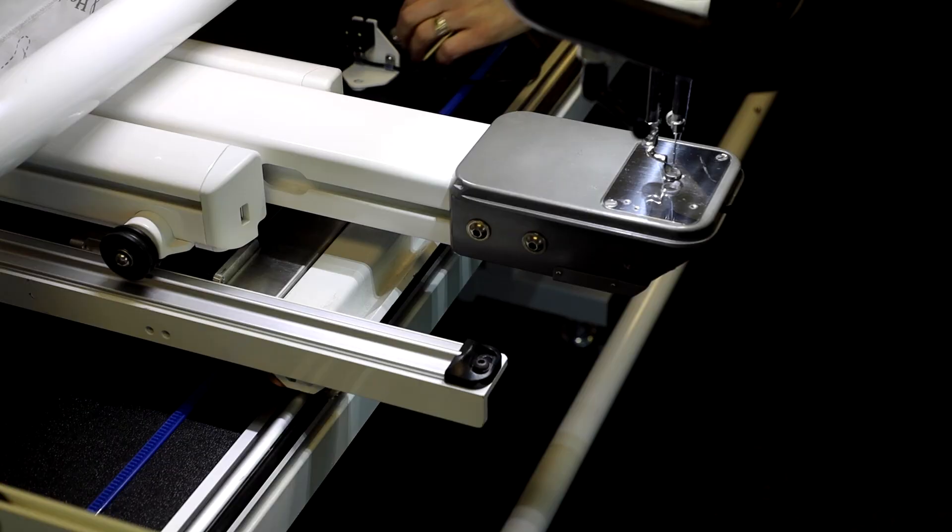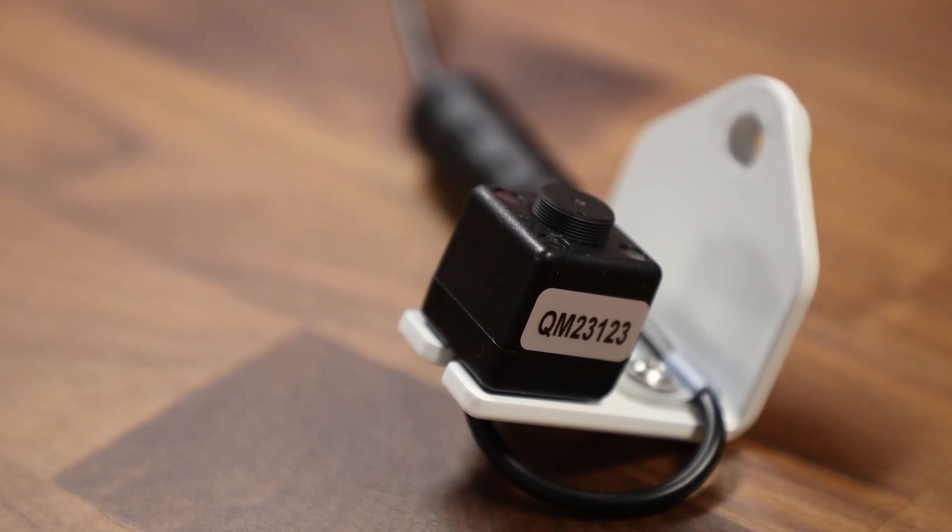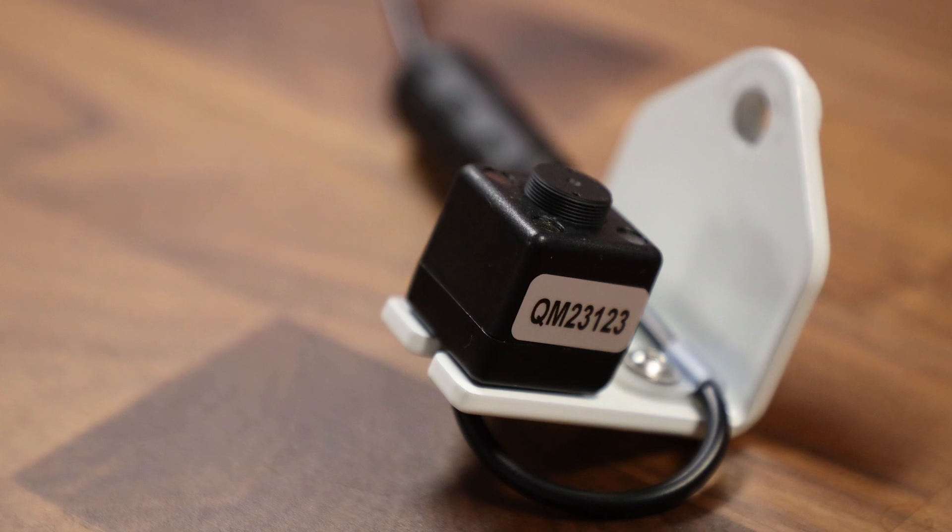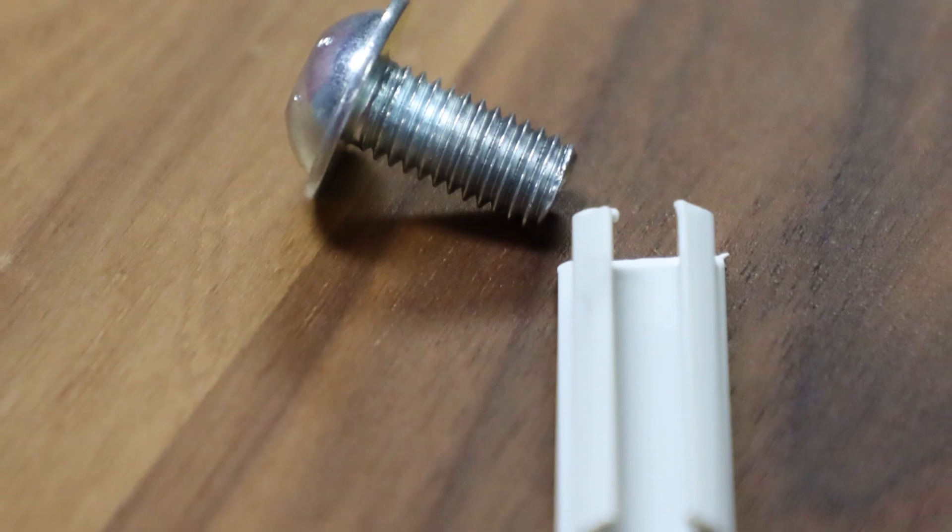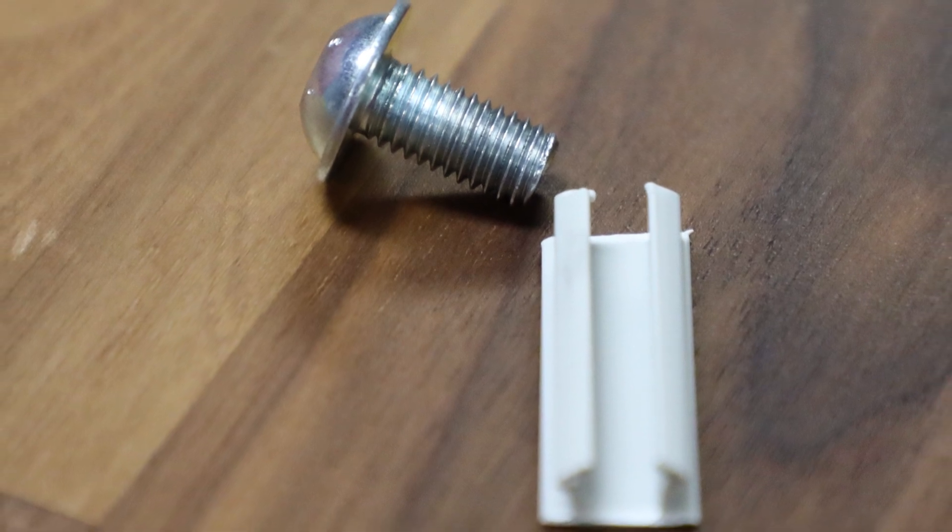Let's start by looking at the parts that are included. We have the Infinity camera that is already mounted on a bracket. Also included is a bolt and a T-slot clip to install.